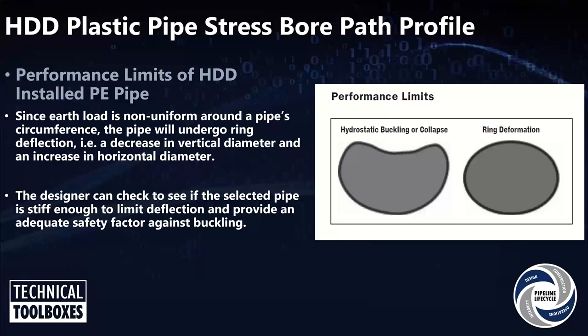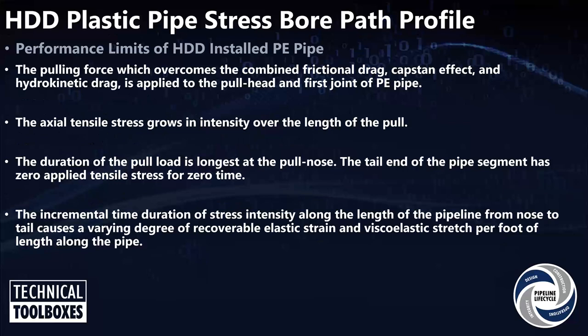Pulling force is what you need to overcome the drag to pull the pipe through that hole — that frictional drag, fluid drag, and all drag components shown earlier. It also has to overcome the capstan effect — that's going through those bends — and the hydrokinetic drag. When we pull a plastic pipe, we always put a fusion cap over the end. When we pull the pipe into the hole, we're actually pulling it against that mud — that's called the hydrokinetic drag. The pulling force has to overcome each one of those components.